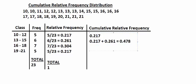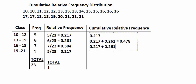For the cumulative relative frequency for the third class, you're looking at the third class, the second class, and the first class — so the two previous classes plus the new class. That comes out to be about 0.782.